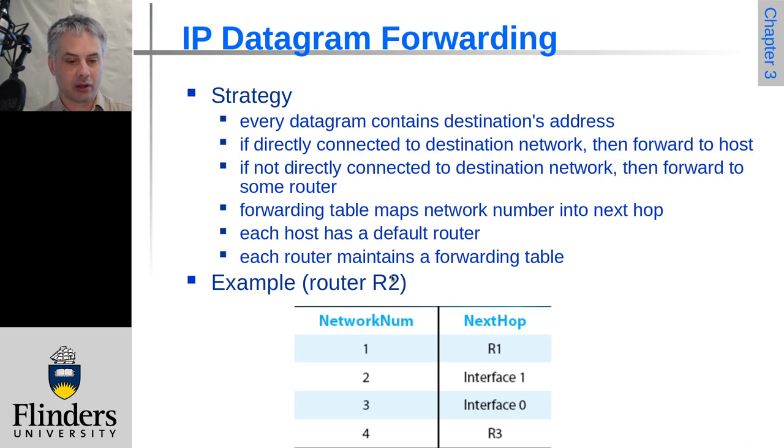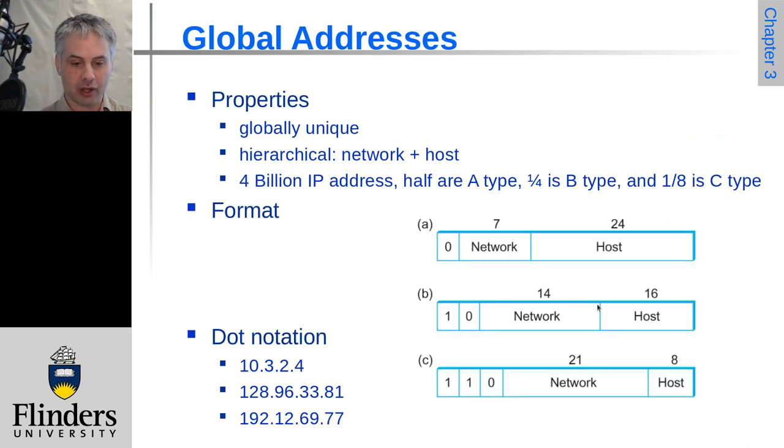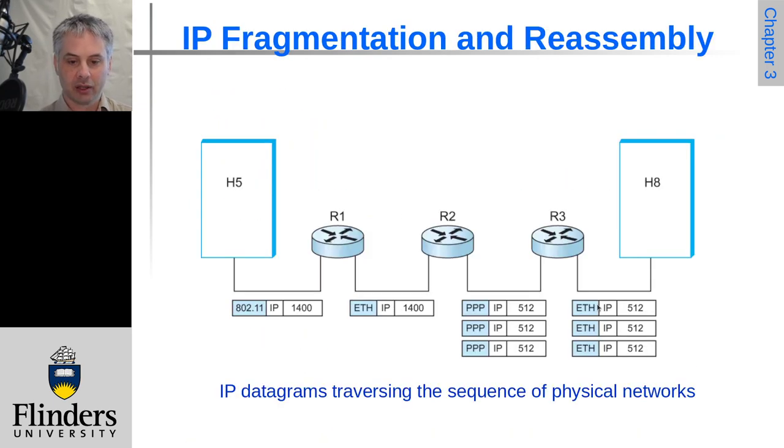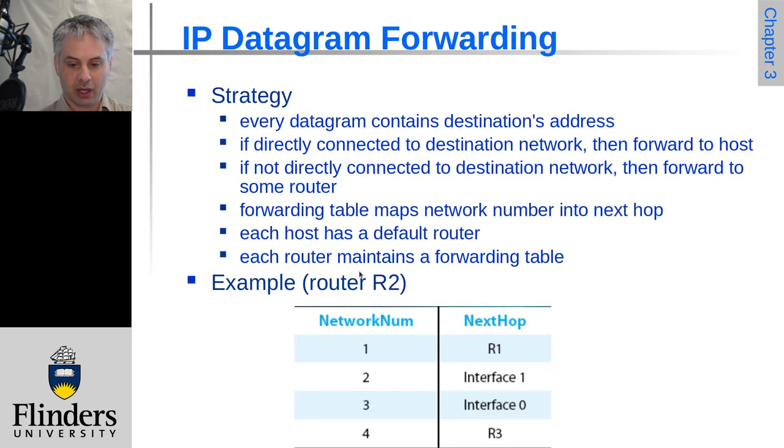So again, if we think back to that diagram, if we look at for router two, we have the different interfaces and routers on there. So let's go back here, router two has connections to router one and router three.